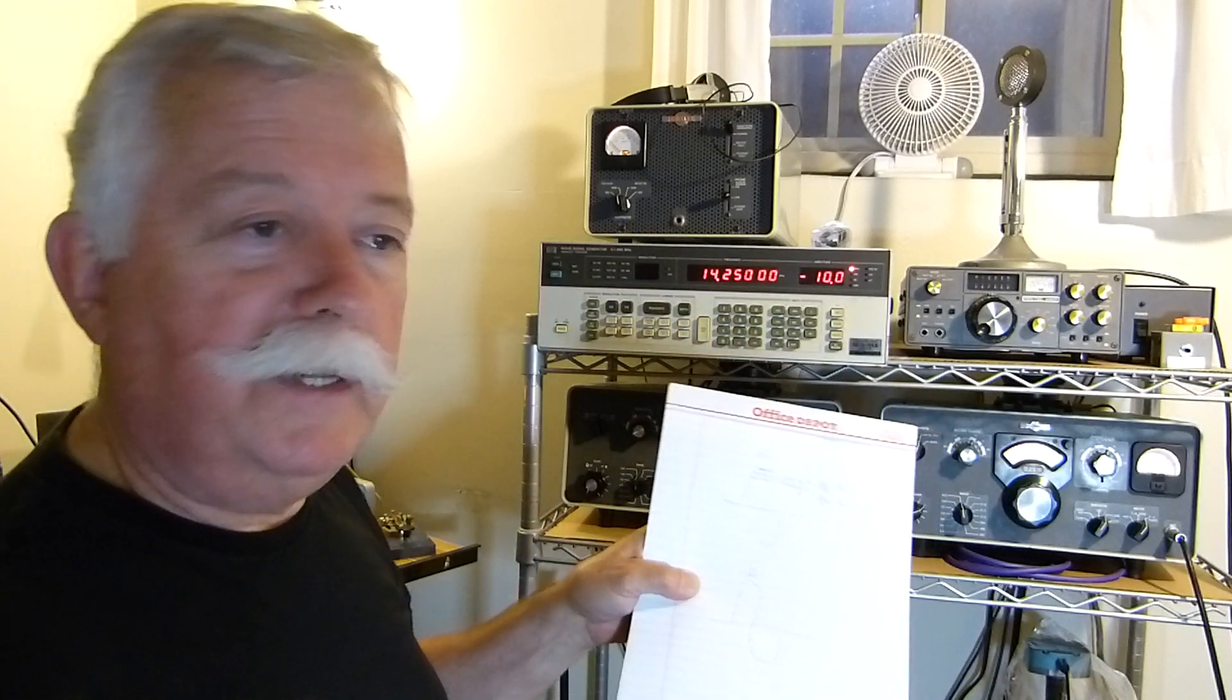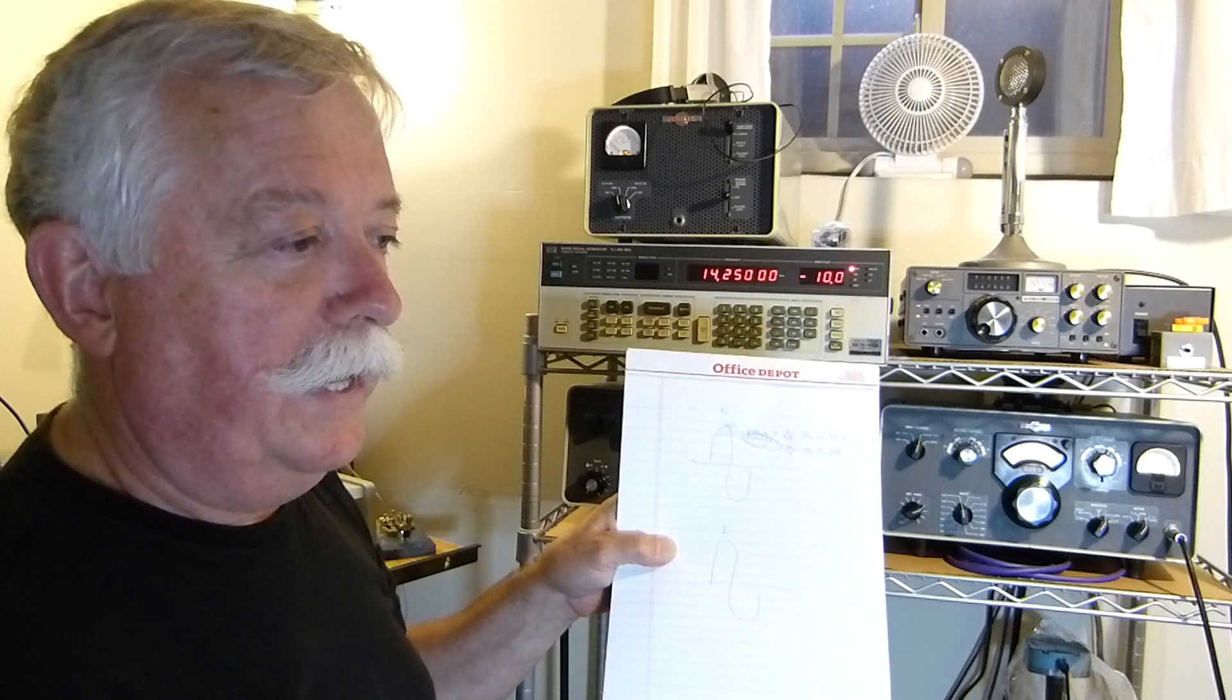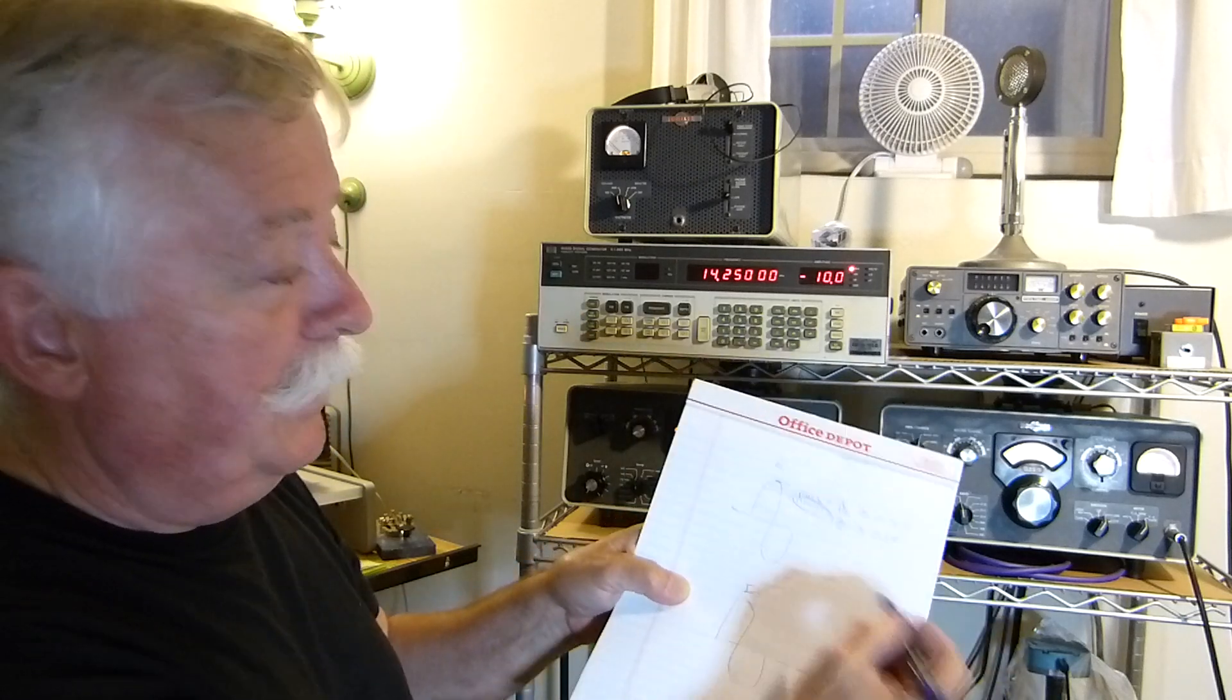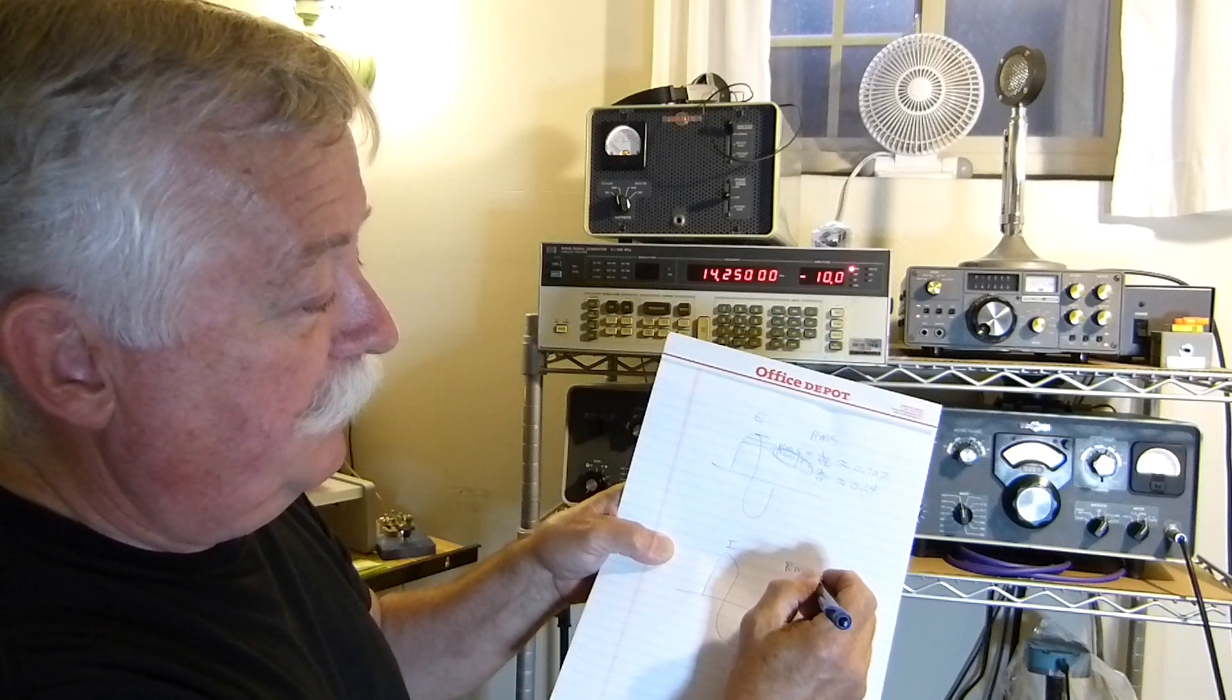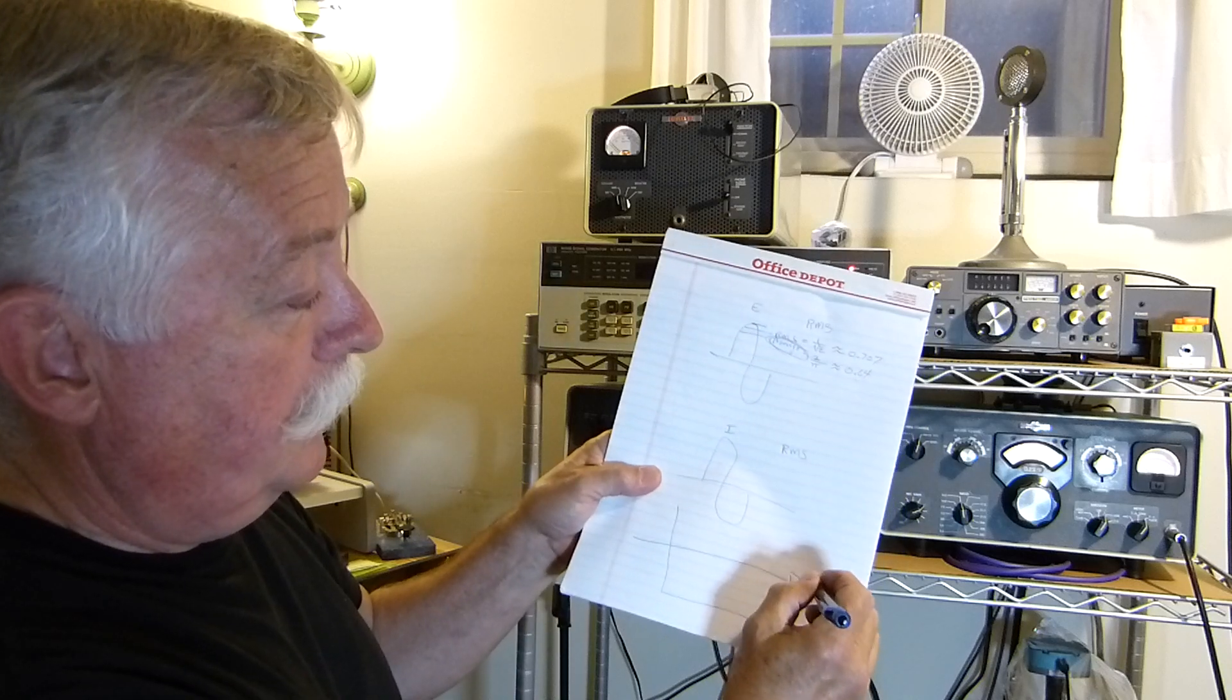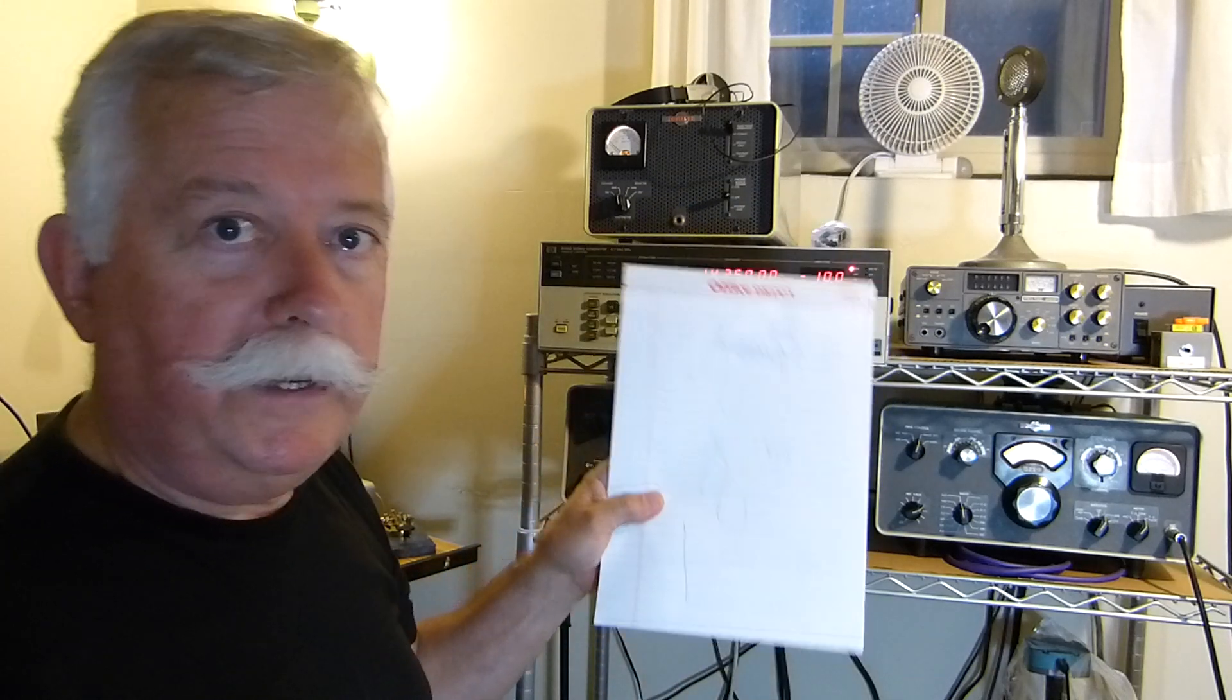The problem is we, as technical people, have confused this word right here, average, and are thinking that if we use this value of 0.64, then we're going to get an average power, and that's incorrect. What we do is we take the RMS value of the voltage, and we multiply it times an RMS value of the current, and we get the equivalent DC heating level.